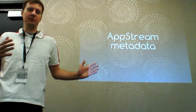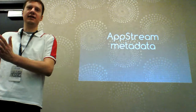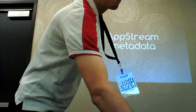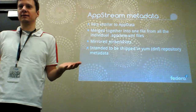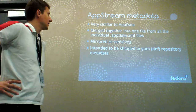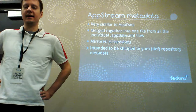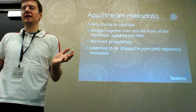AppData is similar to but distinct from AppStream. AppStream is what GNOME software actually consumes, while AppData is what individual packages contain. What happens is that all the individual AppData files that packages ship are combined together into one big XML file called AppStream metadata, which is distributed alongside regular YUM or DNF metadata.